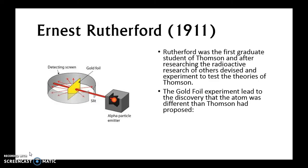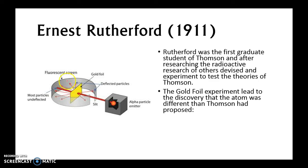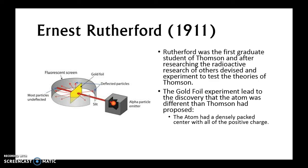It was the gold foil experiment that led to a different discovery than Thompson's. In the setup, an emitter fires radioactive alpha particles at a gold foil surrounded by a detection screen. Rutherford discovered that most of the particles went straight through the gold foil. Some deflected slightly, and very few came back — which was unexpected given Thompson's solid-sphere model.